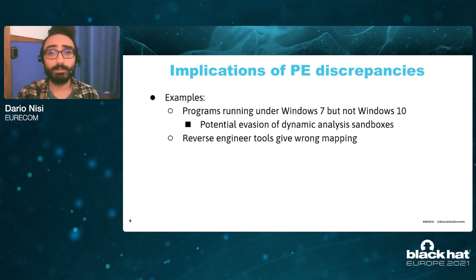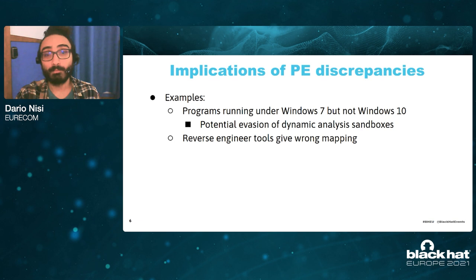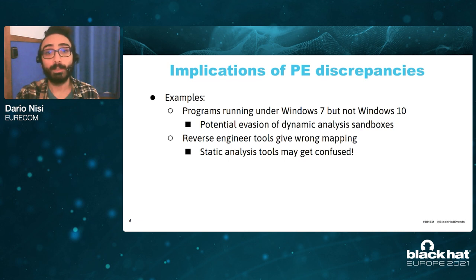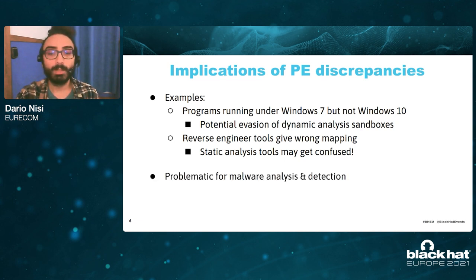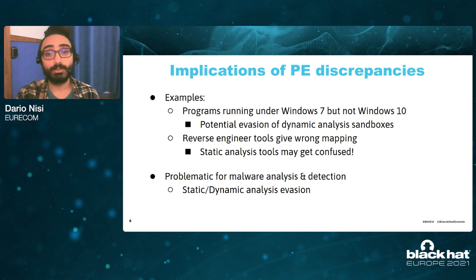Another example: take your favorite reverse engineering tool and imagine that for this program, it gives you the wrong mapping. Imagine that you are already working on reverse engineering this program only to find out six hours later that the mapping was wrong — basically, for six hours of your day, you were just staring at ghosts. This is even worse if the reverse engineering tool is used as part of a static analysis pipeline, because each analysis which relies on this wrong mapping may be biased as a result. The PE discrepancies are problematic, especially in adversarial settings like malware analysis and malware detection. Both static and dynamic approaches can be evaded using PE discrepancies, and even endpoint protection software can be bypassed through PE discrepancies.